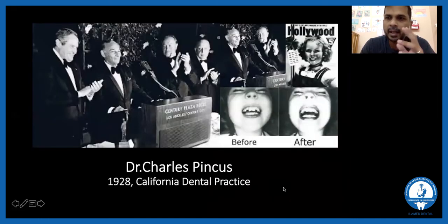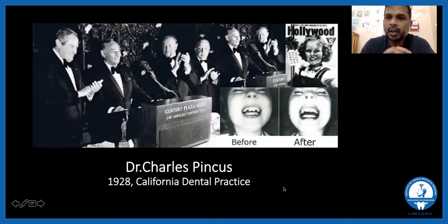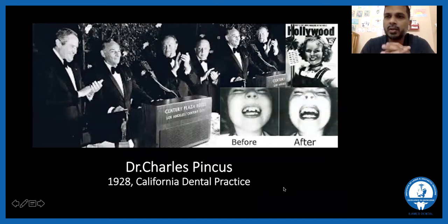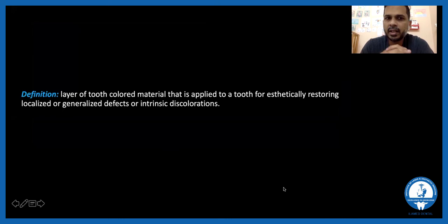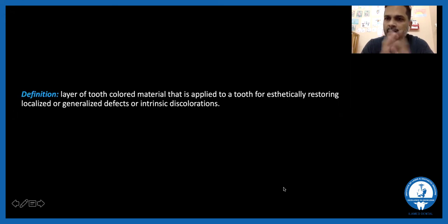It all started back in 1928 when Hollywood was booming and actors wanted a bright white smile on screen. Dr. Charles Pinkus is the person who pioneered and popularized veneers. Basically, they were direct applications on teeth where ceramic pieces were used to give people that white smile. According to definition, a veneer is just a layer of tooth-colored material applied to a tooth for aesthetically restoring it.